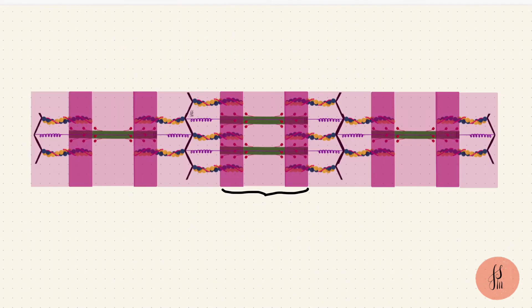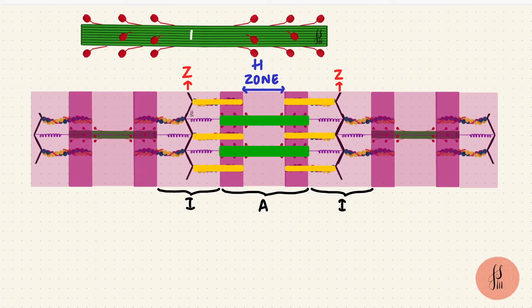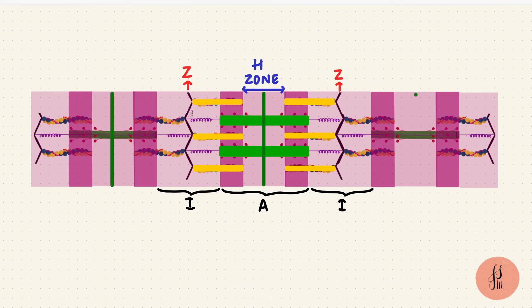In the center of the A band, there is a pale H zone. This is where the filaments don't overlap. The myosin molecules that form the thick filaments, they've got their tails in the center and heads that angle outwards. They are arranged in an anti-parallel direction, so that the myosin tails attach to the center, creating the M line. So that's the dark line at the center of the H zone.